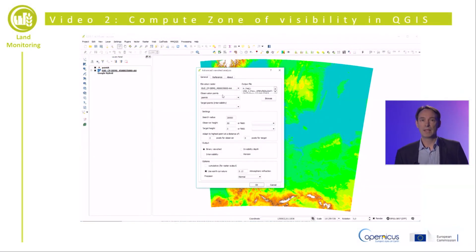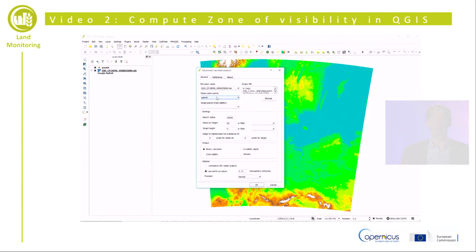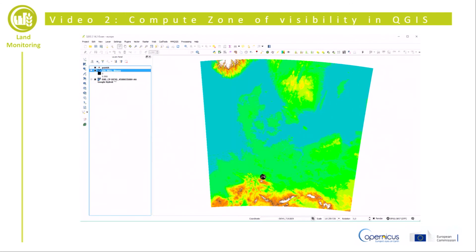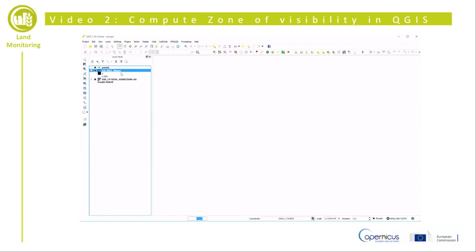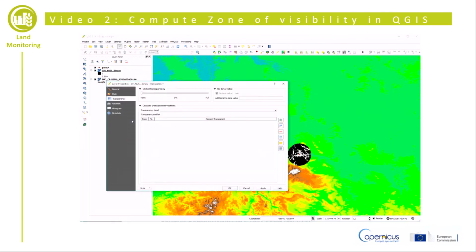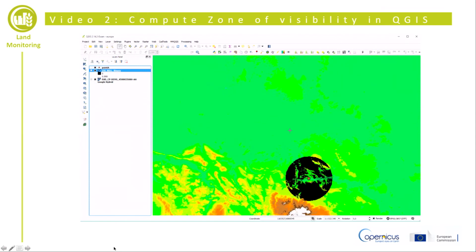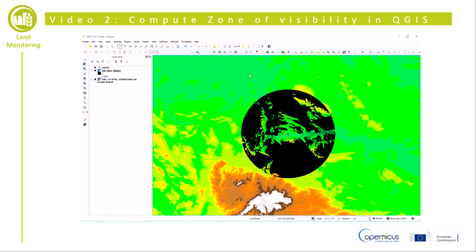Then we launch the viewshed plugin, which is the eye icon in QGIS. We select the DEM layer as the elevation raster and select point A as the observation point. We then select the output file, set the research radius to 20 km, and set the observation height to 80 m, which is the hub height of the windmill. I check the binary viewshed, use the Earth radius, and select normal precision. We zoom in to the resulting raster and set the transparency: 1 is transparent for visible areas and 0 stays black for obstructed views.